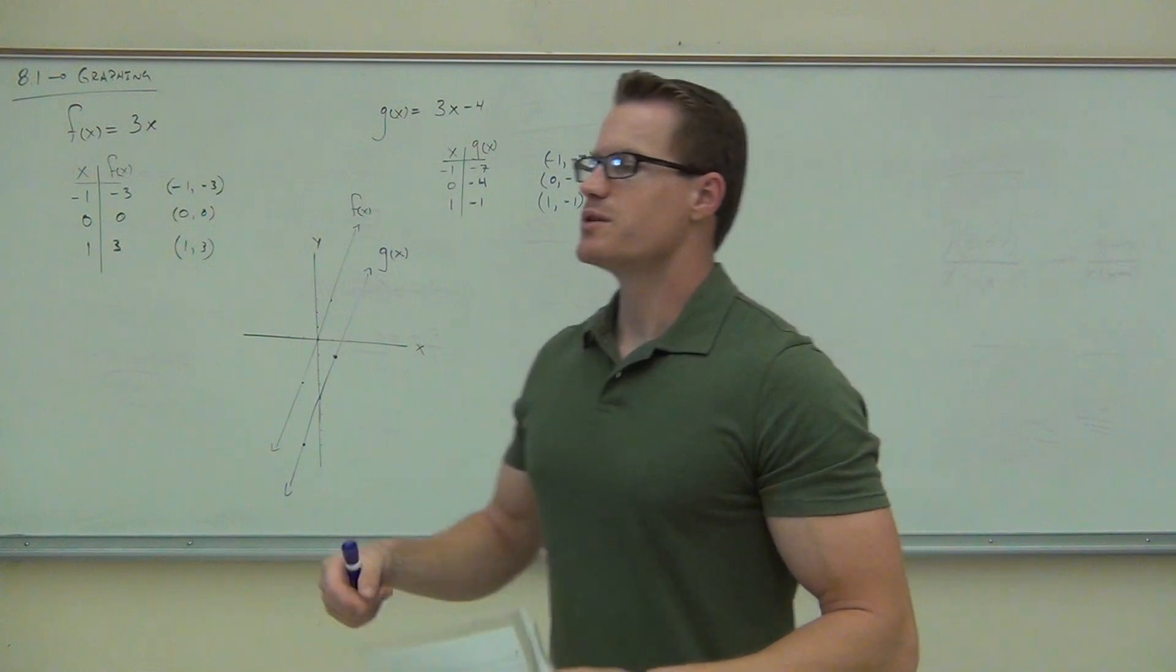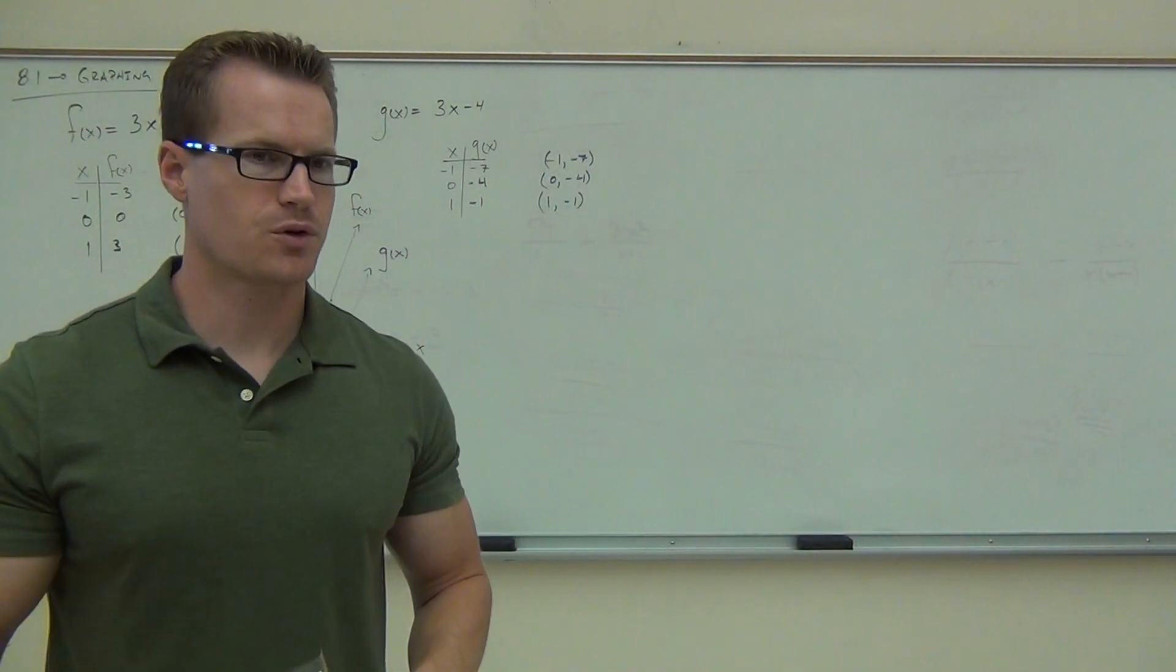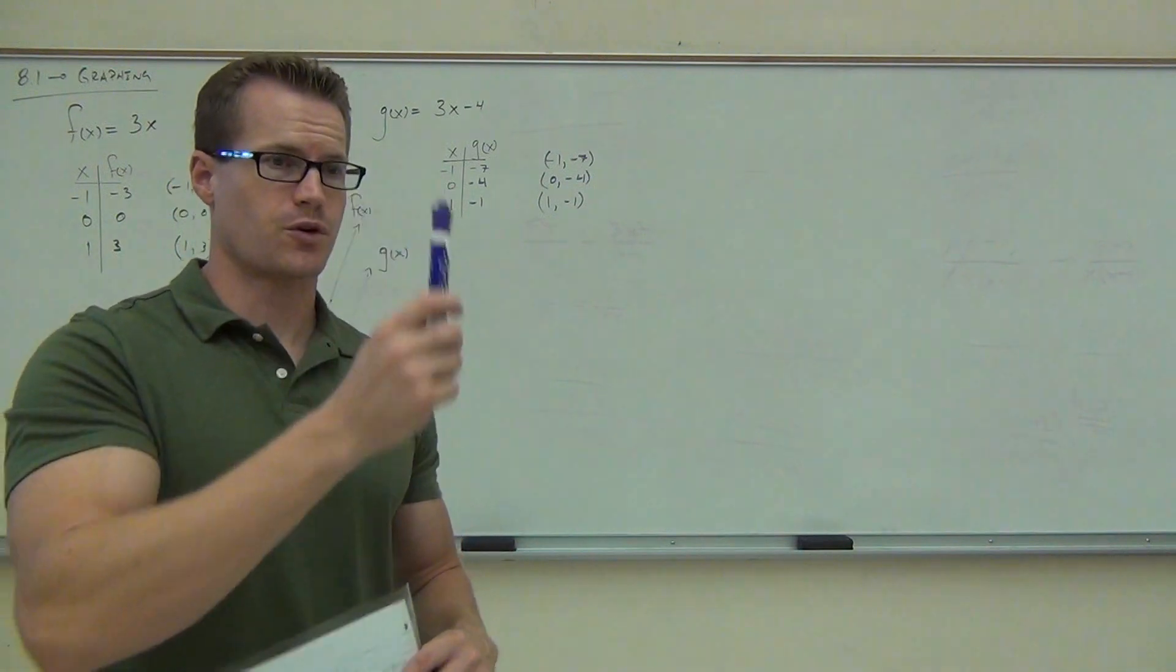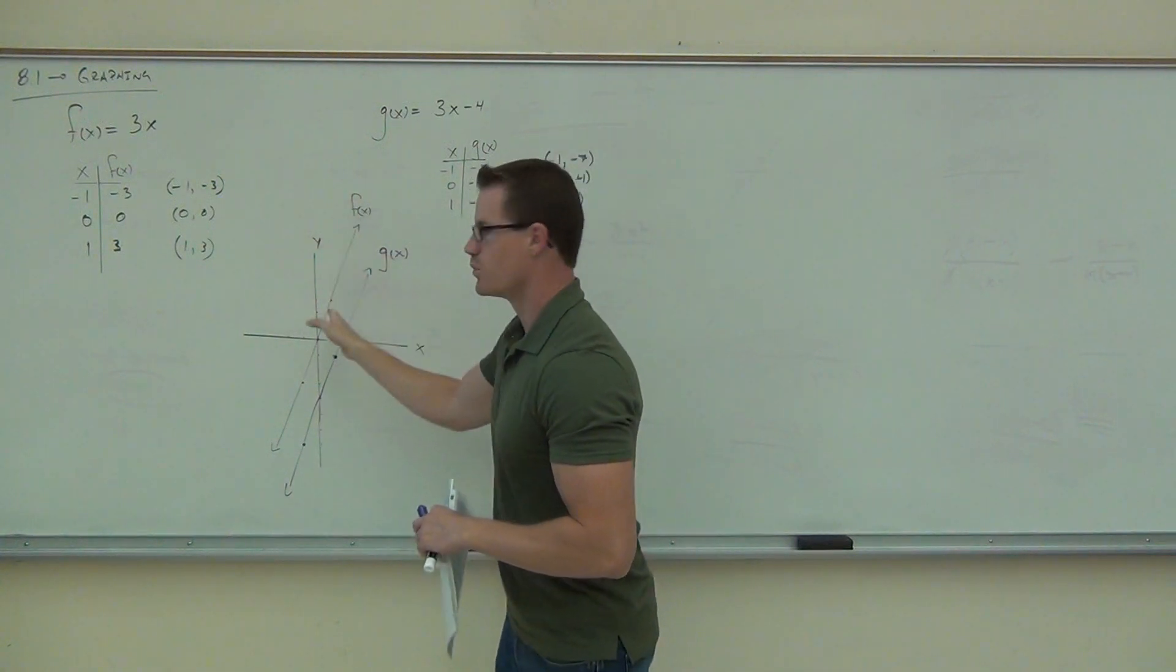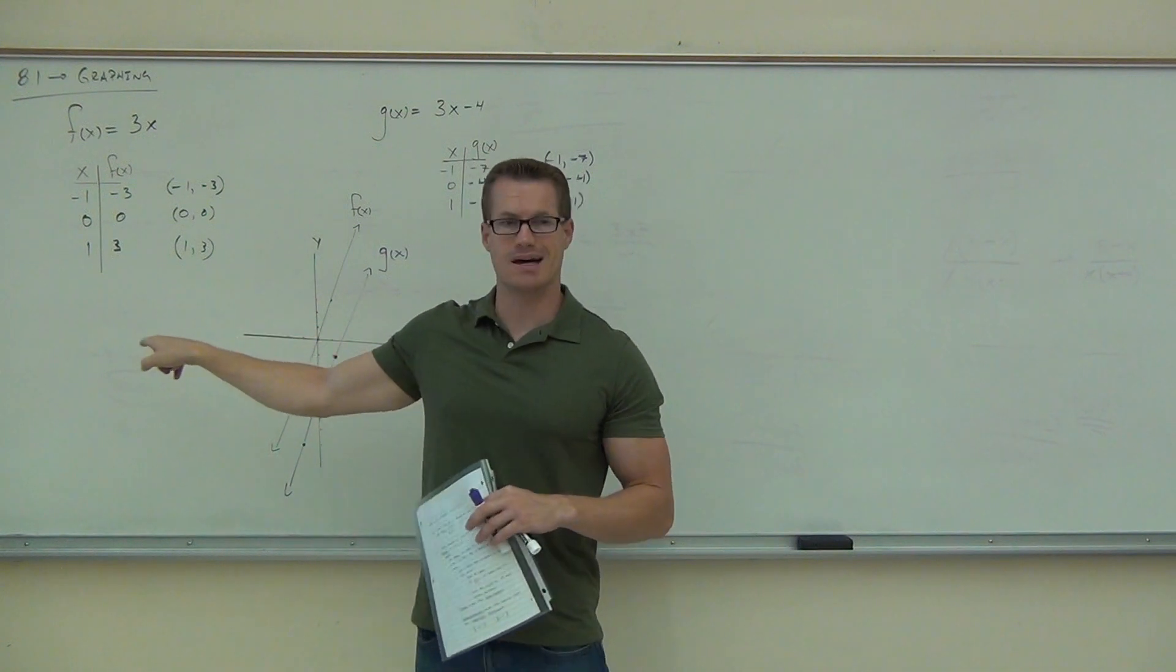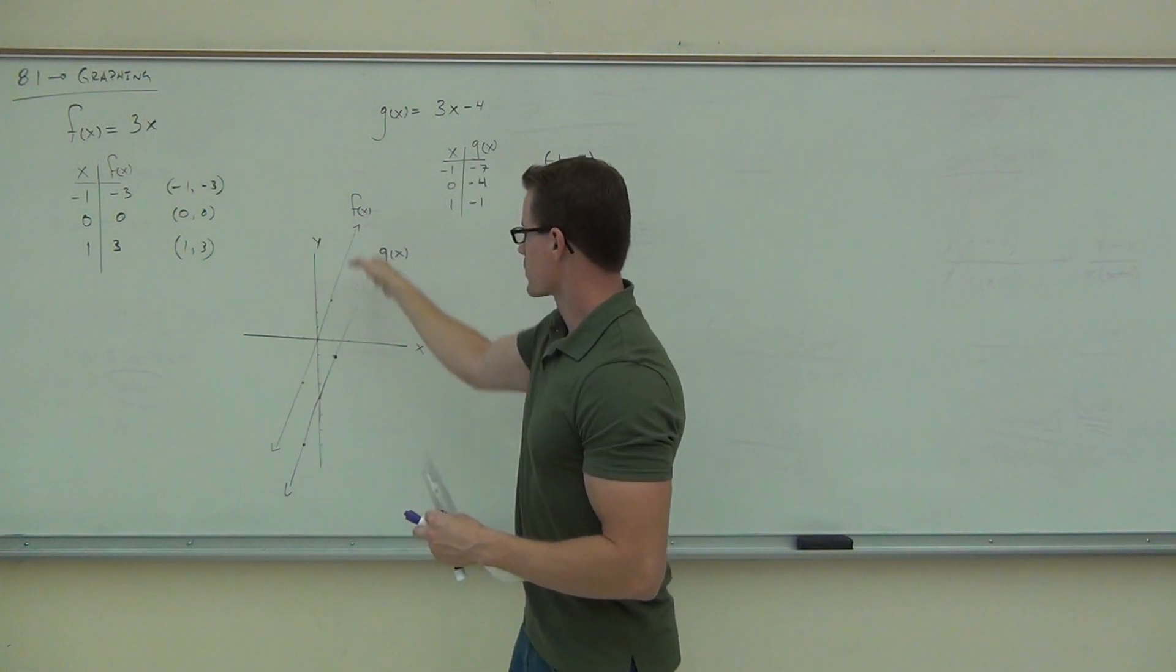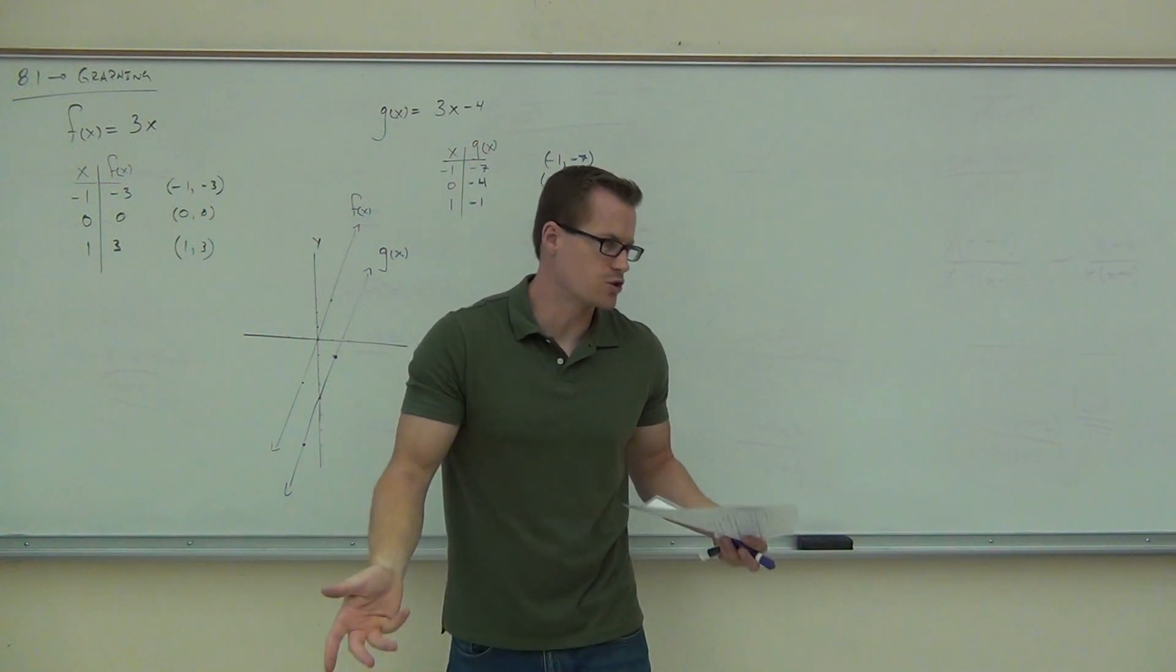Now, a couple things. Firstly, both these graphs are called functions because they pass something called the vertical line test. We're going to cover what the vertical line test is in more detail later on. But basically, if you imagine a whole bunch of vertical lines, verticals this way, every vertical line should touch each of these lines at only one spot. It means that the graph can't ever double back on itself. Otherwise, it's not a function. So here, look at the black line, the F of X. Every vertical line touches that at only one spot. Every vertical line touches the G of X at only one spot. Do you see what I'm talking about? That means that these things are called functions. So that's great.